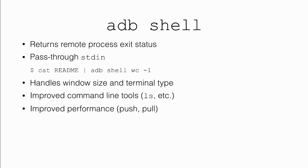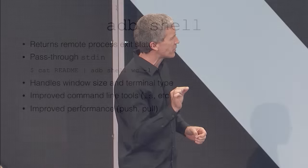There were improvements to ADB in both functionality and performance. We made it much more full-featured — more like a real shell — so you can get a lot more content from commands like ls, and pipe results from ADB commands to other processes on the host. There were also major performance improvements to push and pull through a really complex algorithm known as... increasing the buffer size. You can get the process exit status and pipe standard input to the remote device, which is particularly useful for automating testing.